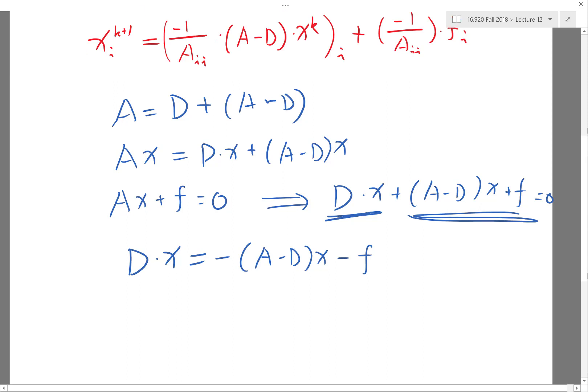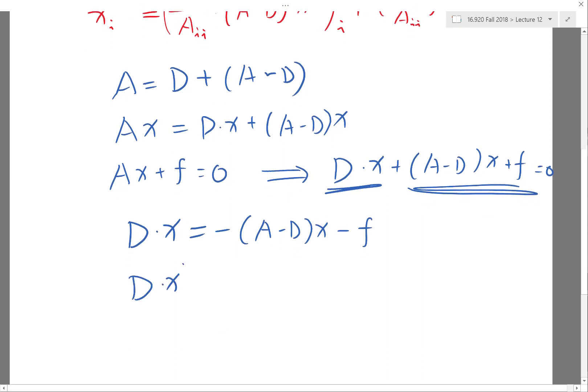The Jacobi method is nothing but taking k+1 over here and taking k over here. So essentially we are splitting the matrix into diagonal parts and off-diagonal parts. The diagonal part is going to be inverted because inverting a diagonal matrix is really easy. And the non-diagonal part is going to be applied to the previous time step's solution. And we just iterate until convergence.